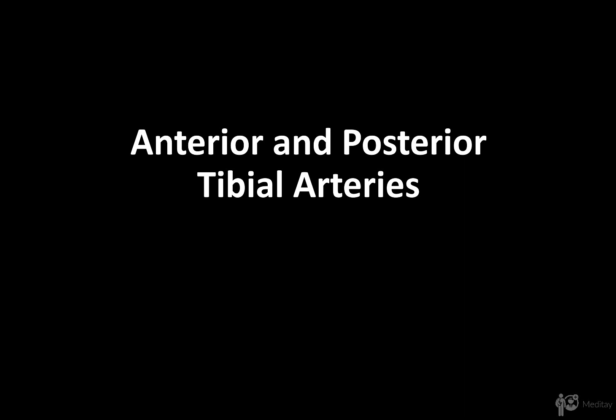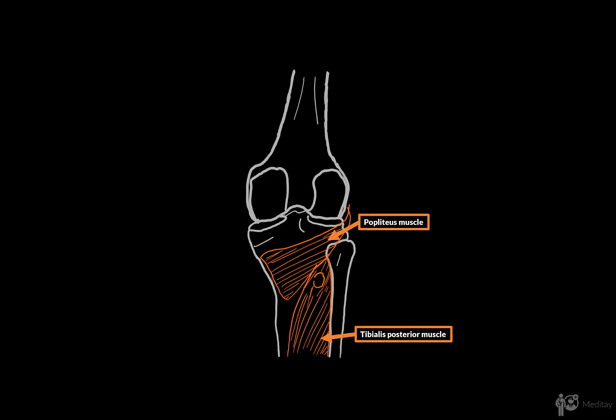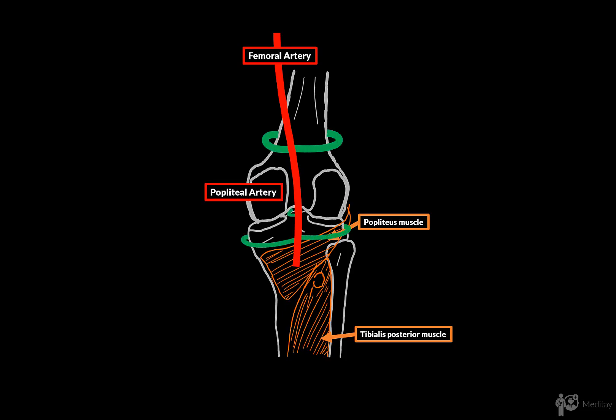In this video, we're going to look at the anterior and the posterior tibial arteries, as well as the arterial blood supply of the foot and ankle. To do that, we first need to look at the posterior aspect of the knee, because as the femoral artery comes down, it becomes the popliteal artery in the popliteal fossa, where it branches out supplying the knee with blood. Then, in front of the popliteus muscle, it divides into two terminal branches: the anterior and the posterior tibial arteries, which are the arteries we're going to focus on in this video.